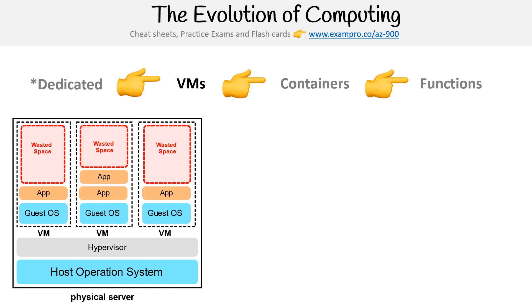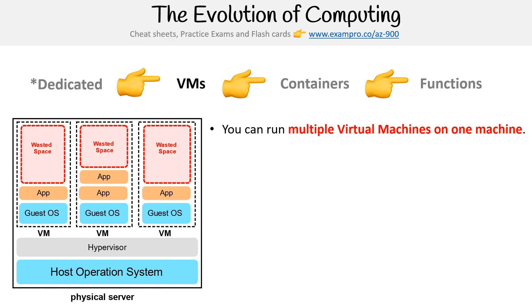So now we're moving on to virtual machines, also known as VMs. The idea here is that if you had a physical server and you had the capability of running virtual machines, that's like running a machine within a machine. And so now you're able to run multiple applications on a single machine.